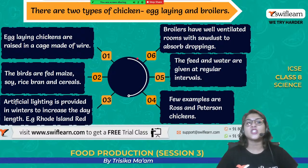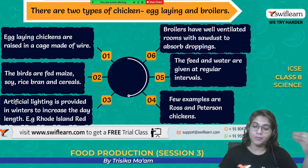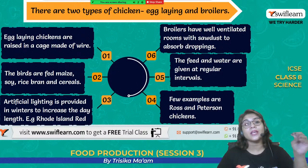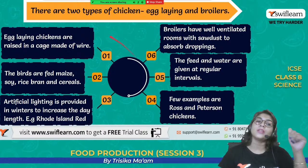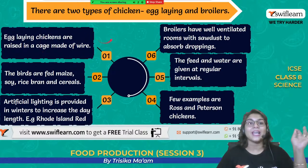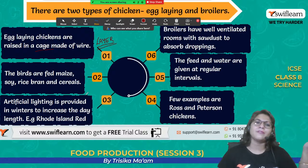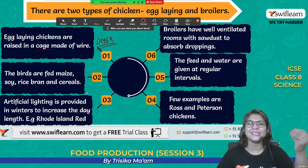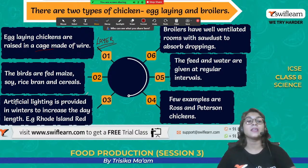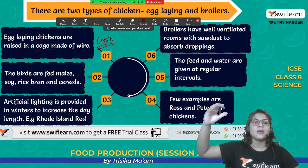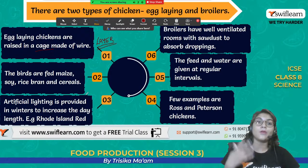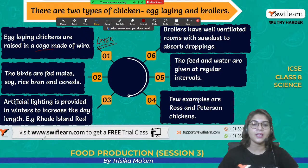We can divide chickens into two main types. The egg-laying chickens are known as layers — they are kept in cages made of wire and feed on different types of things like maize, rice bran, and cereals. Artificial lighting is also provided to them so they get proper lighting, especially in winter when day length is shorter, so they can feel comfortable and lay eggs properly. A very good example of a layer breed is Rhode Island Red.